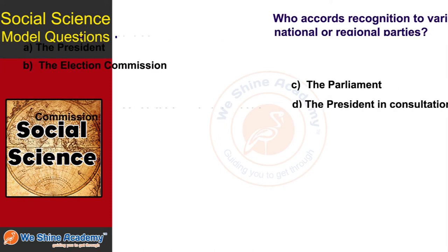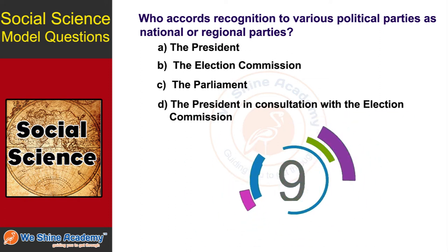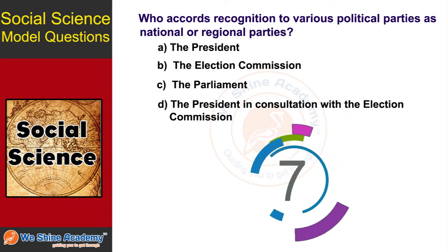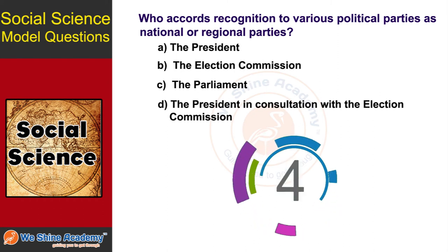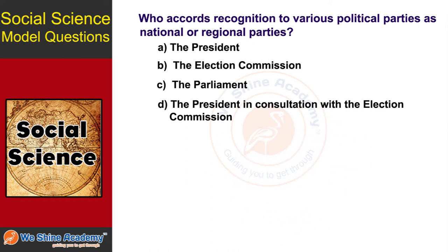The next question is: Who grants recognition to various political parties as national or regional parties? The answer is Option E, the Election Commission.